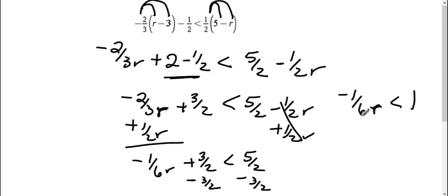Then we need to get rid of this negative one-sixth, so we're going to divide by a negative one-sixth, which we're not going to forget to flip that sign, because we're dividing by a negative, and one divided by a negative one-sixth, we get a negative six, because it's really the same thing as multiplying by the reciprocal.